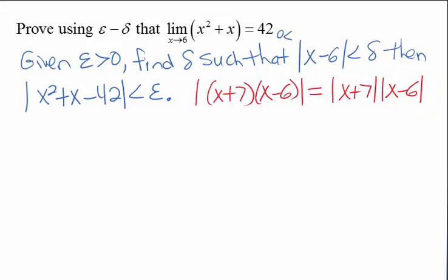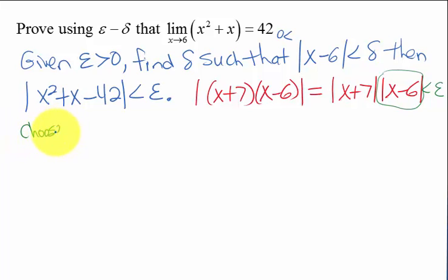We want this to be less than epsilon. So I want to put some requirement on the absolute value of x minus 6 so that it is small when multiplied by the x plus 7. I'm going to choose — and this is just something we do here to lead us to a delta, and remember these aren't unique, so you could have made another choice — but we typically pick it less than 1, so that we have a positive number less than 1. A fraction multiplied by the x plus 7 will make that number even smaller.